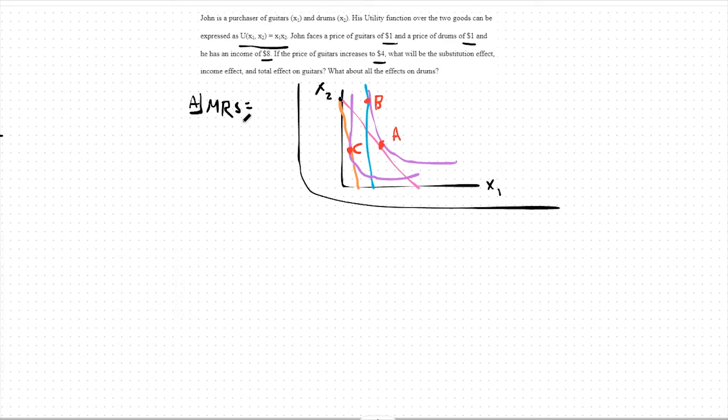Remember that the marginal rate of substitution is the marginal utility of good one over the marginal utility of good two. In this case, that's going to be X2 over X1. If you need additional help finding the MRS, you can look at the topic video a few topics back. As for our next step, we're going to equate our MRS to the price ratio. This means X2 over X1 will equal P1 over P2. In this case, that means 1 over 1 or 1. So, optimally, X2 equals X1.